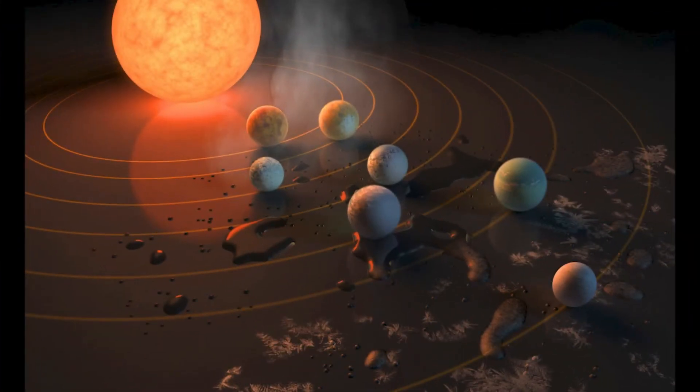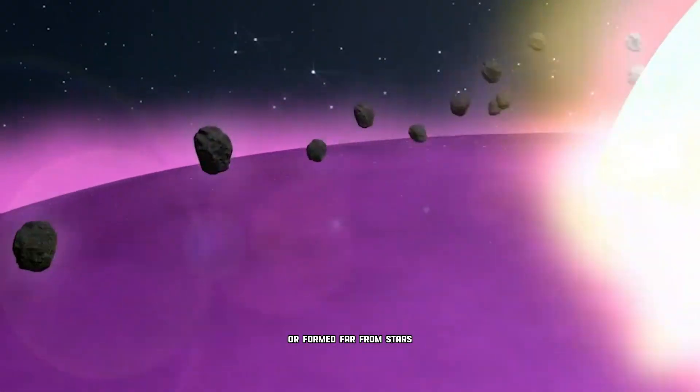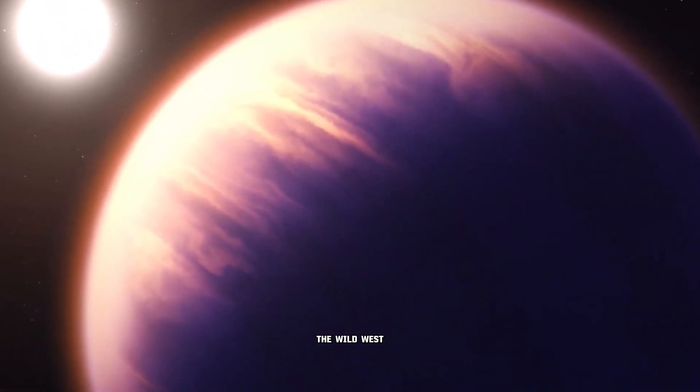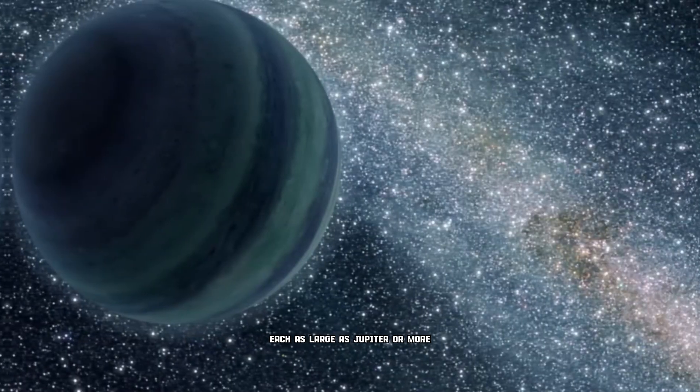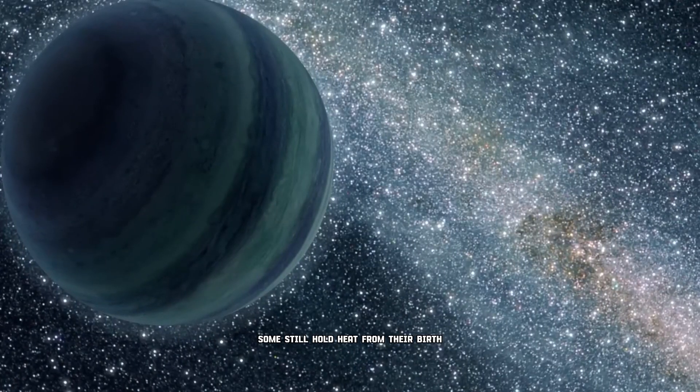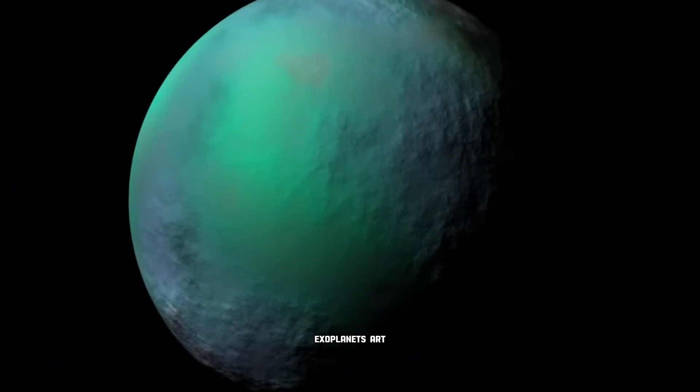These nomadic worlds broke away from their host stars, or formed far from stars, akin to renegades in the Wild West. There are at least 70 stray planets in the universe, each as large as Jupiter or more. Some still hold heat from their birth, making them detectable in ways exoplanets aren't.